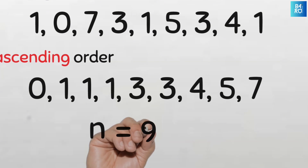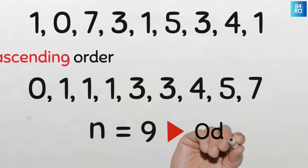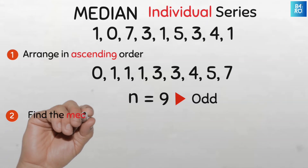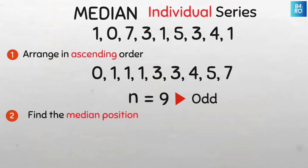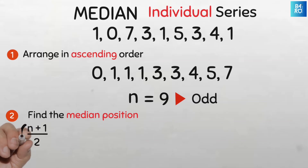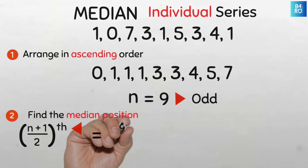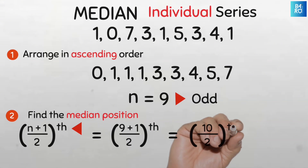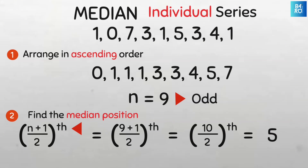Our number of data elements n is 9 and this is an odd number. Now because our data values are already arranged in order, it will be easy to pick out the middle value — all we need to know is its position. There is a simple formula for this: the median position is given by (n+1)/2. The superscript 'th' means whatever we find here is the position of the median, not the median itself. So the median position is (9+1)/2 = 10/2 = 5. Our median is going to be at the fifth position.